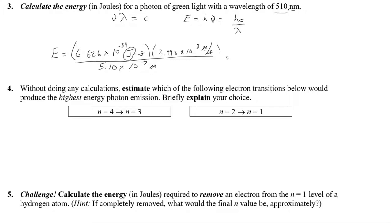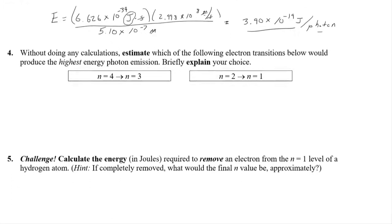With three significant figures, the energy works out to about 3.90 × 10⁻¹⁹ joules. Remember numbers, sig figs, and units are all really important. To be precise, since we have a photon, you can say joules per individual photon. Later we'll think about moles of electrons and the units will change, but for right now that's perfectly fine.